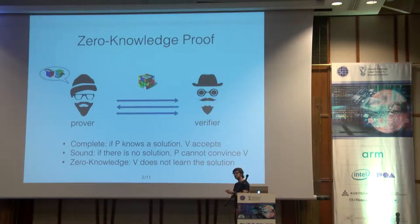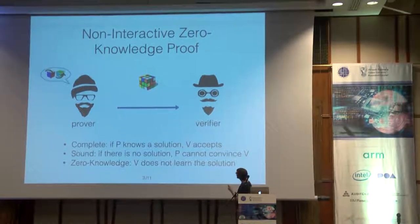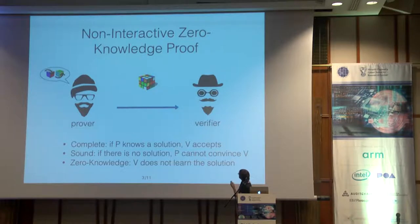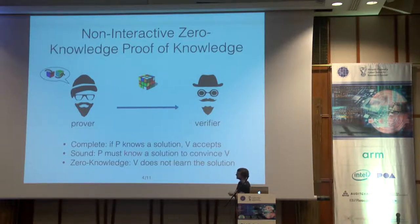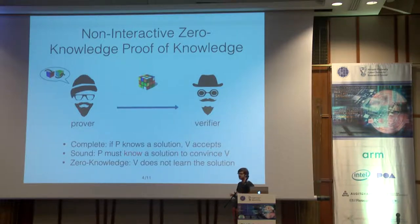A non-interactive zero-knowledge proof is a zero-knowledge proof which consists of a single flow from the prover to the verifier. And we look particularly at non-interactive zero-knowledge proof of knowledge, which guarantees not only that there is a solution to the puzzle when the proof is accepted, but that the prover knows this solution. Formally, this is stated by saying that there should be an extractor which can extract from the prover a witness, which is a solution to the puzzle.